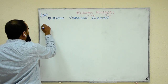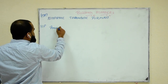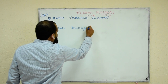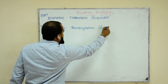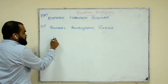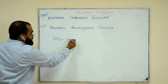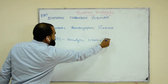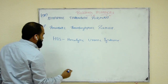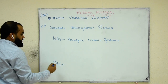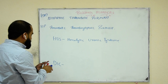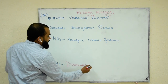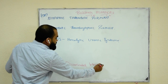The second one is TTP — thrombotic thrombocytopenic purpura. There is something called HUS, which means hemolytic uremic syndrome. And there is something called DIC — disseminated intravascular coagulation. All these four are important; we usually confuse them in exams when choosing which option.